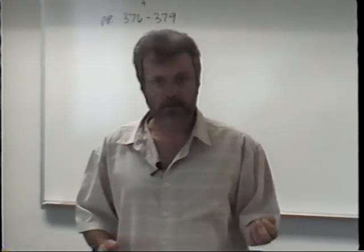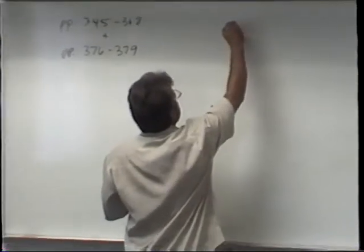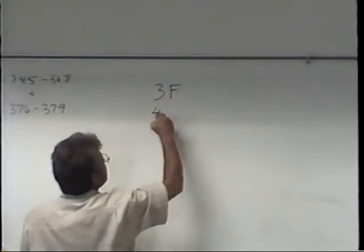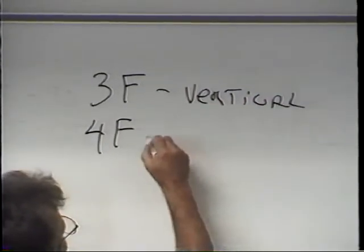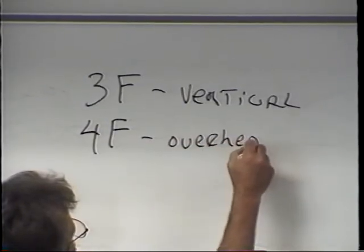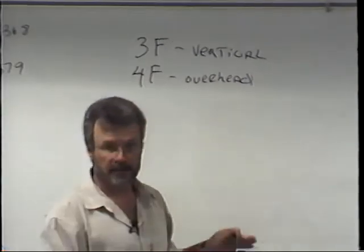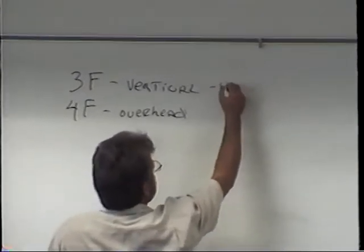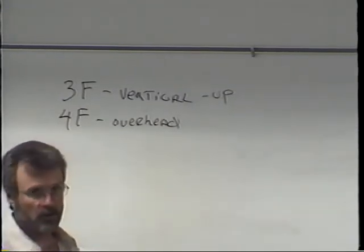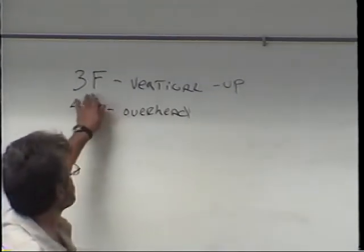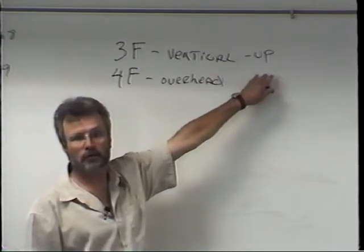Weld 1760 is vertical up and overhead. If you remember from our previous lecture, that would be 3F, the 3F position, and the 4F position - vertical and overhead. Now when you're talking about the vertical position, you also have to talk about the weld progression. Is it up or is it down? Vertical up is what you're learning in this class. We're starting at the bottom of the plate and we're welding up as opposed to starting at the top and welding down. So whenever you're talking about the vertical position, you always have to designate: was the welding up or was the welding down?